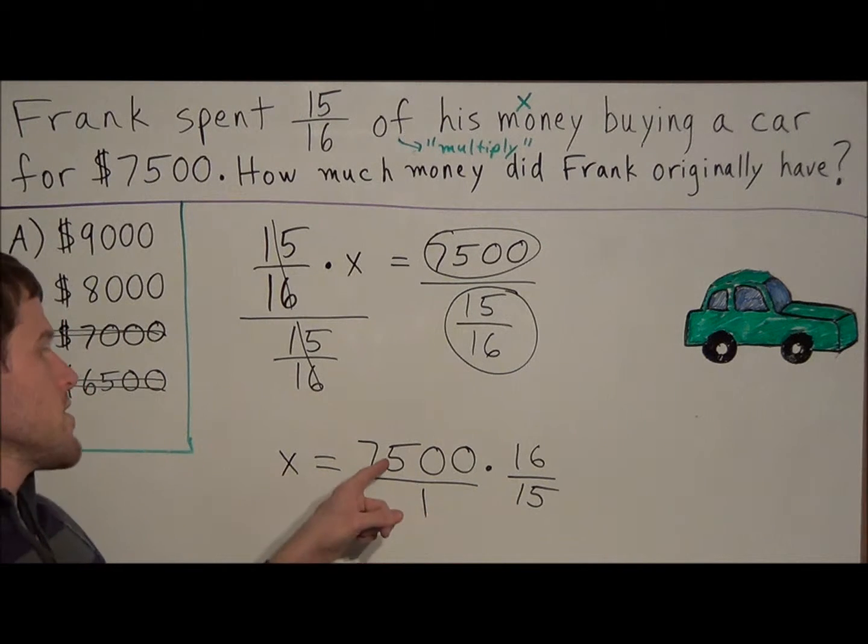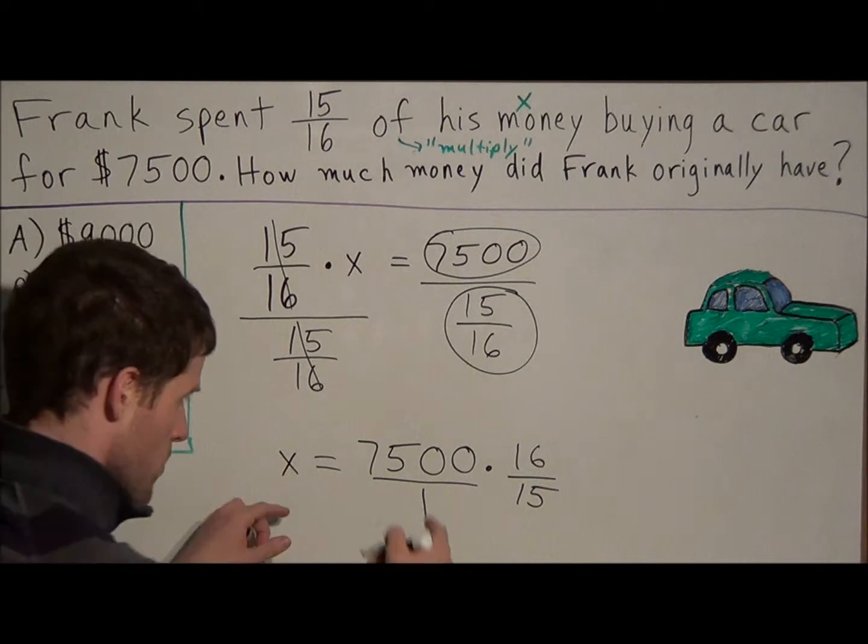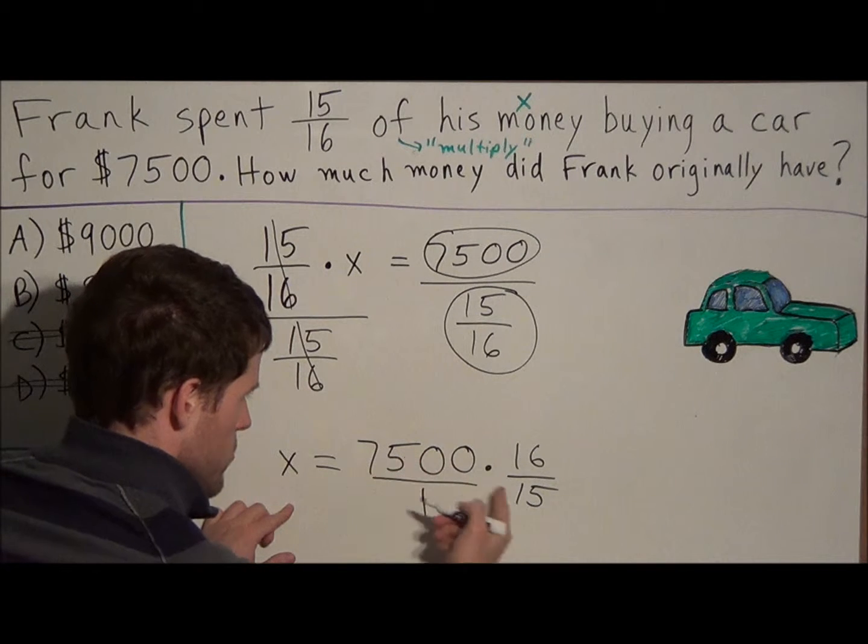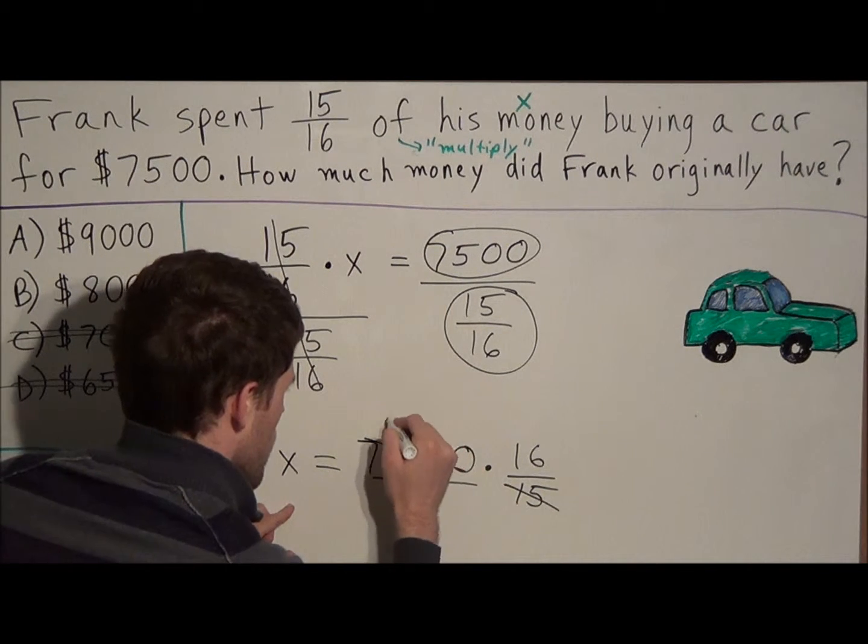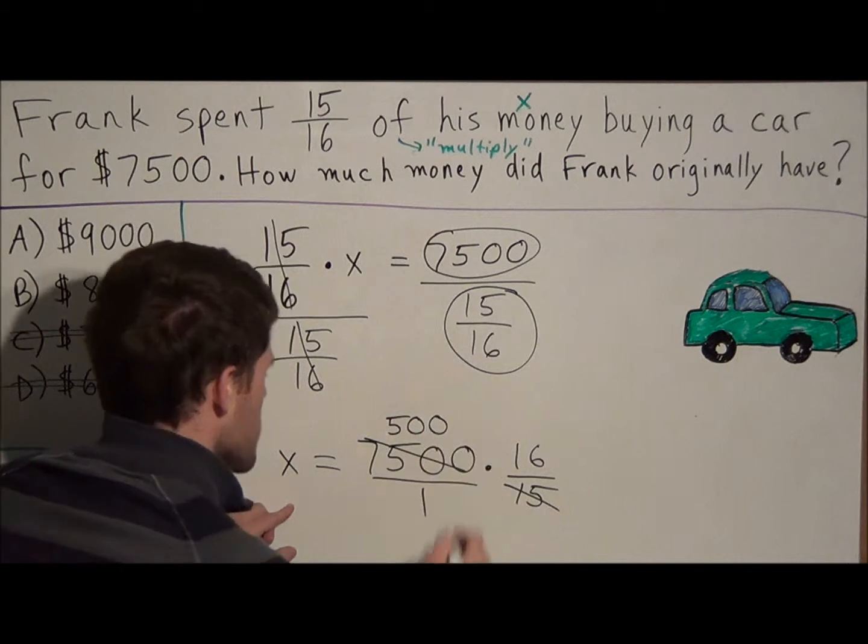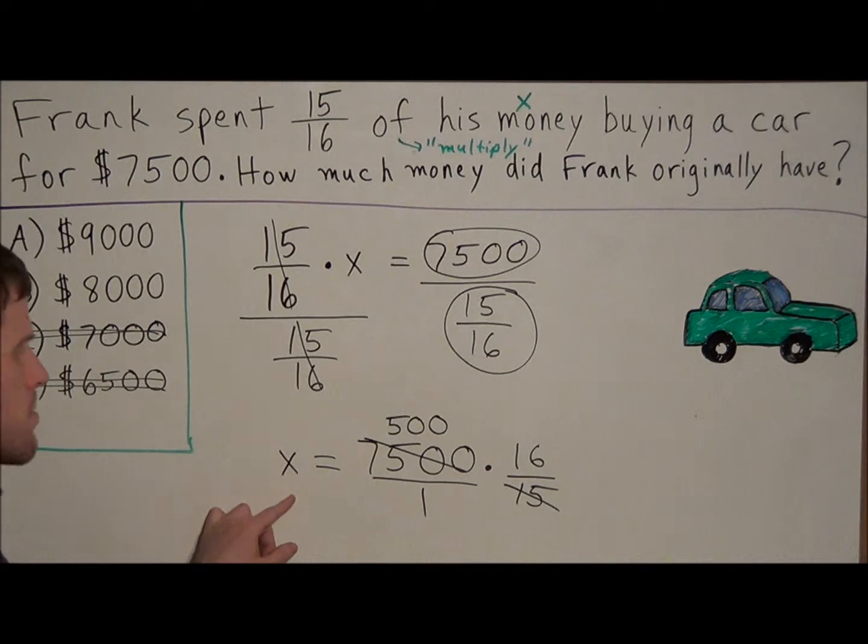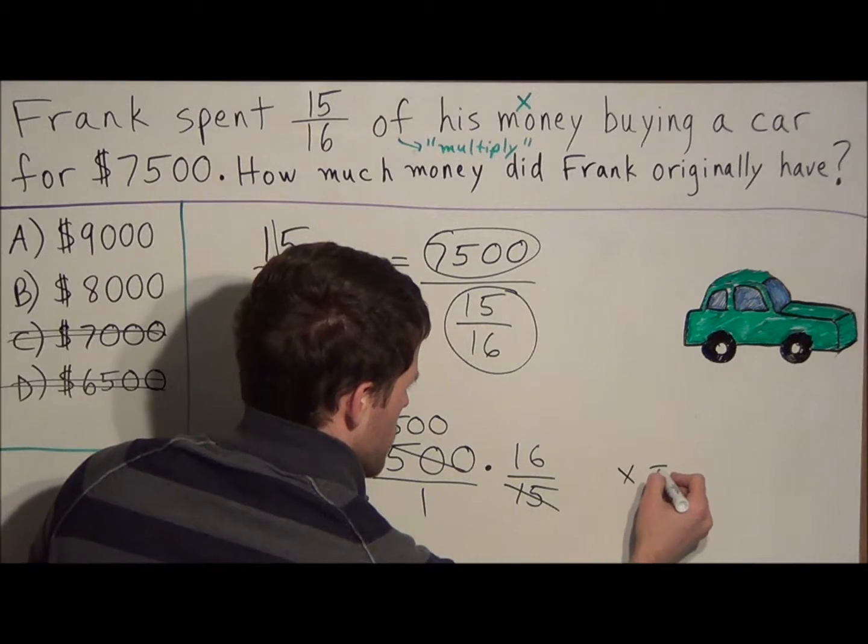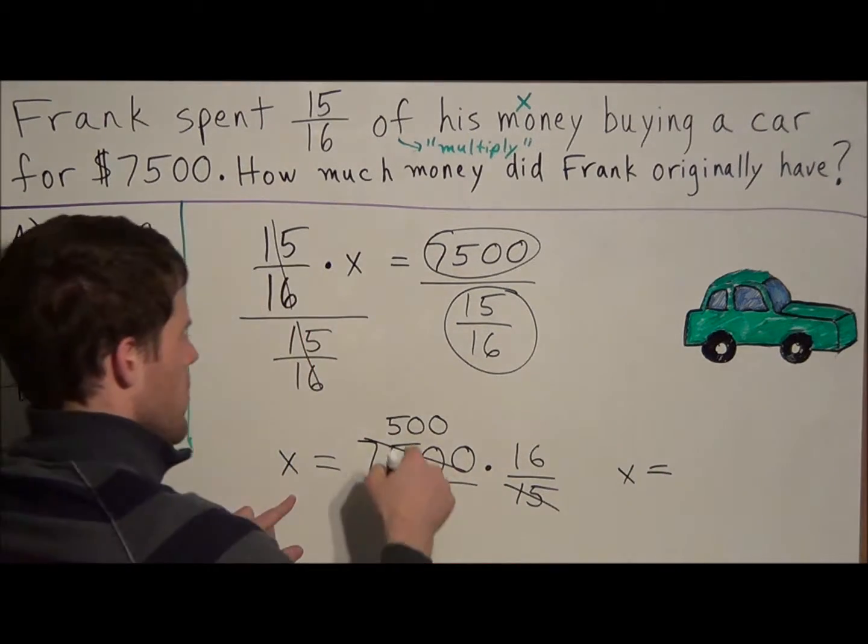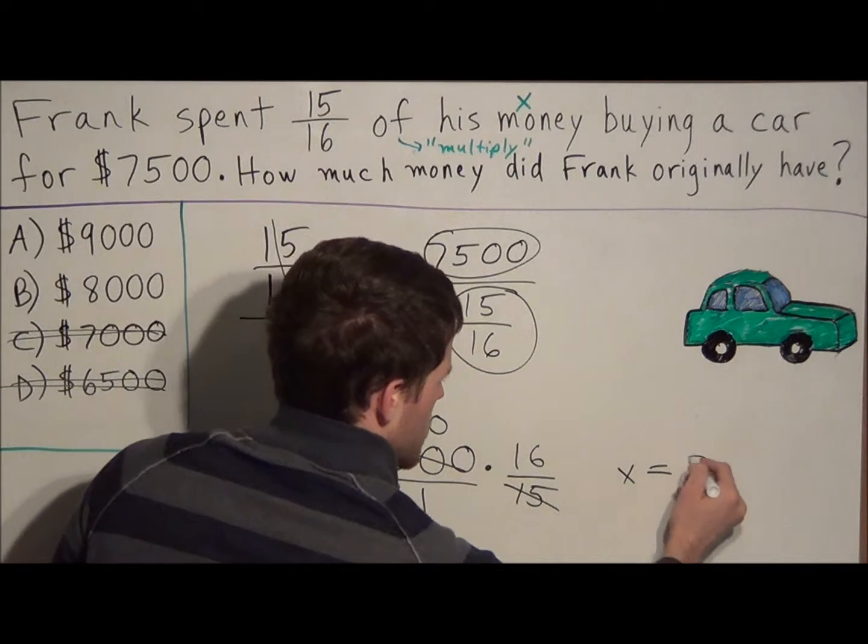Notice that 15 will divide into 7,500 evenly. So if we divide these first, 7,500 divided by 15 is 500. And then from this step here, all we need to do is multiply. 500 times 16, which tells us that our variable X is equal to 500 times 16 is 8,000.